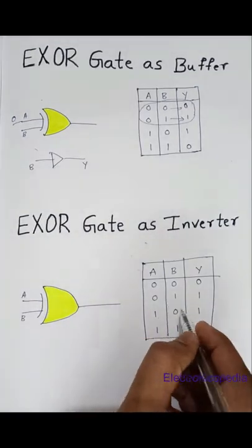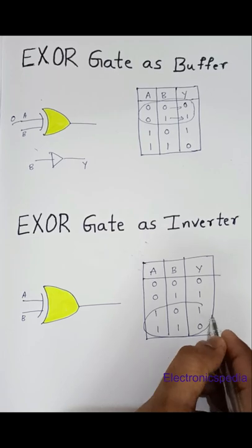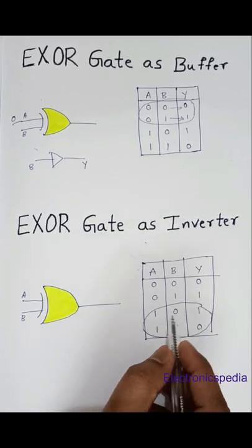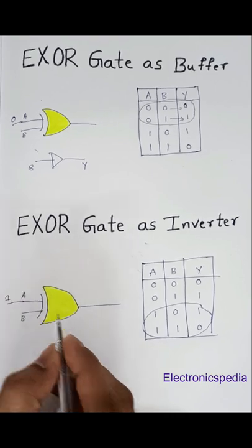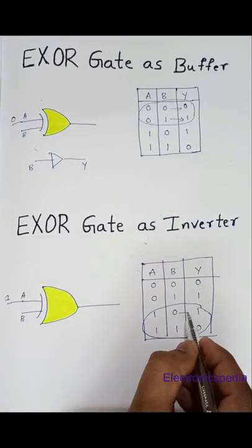I'm going to tie A to one. Now what happens? The output will be inverted with respect to input B.